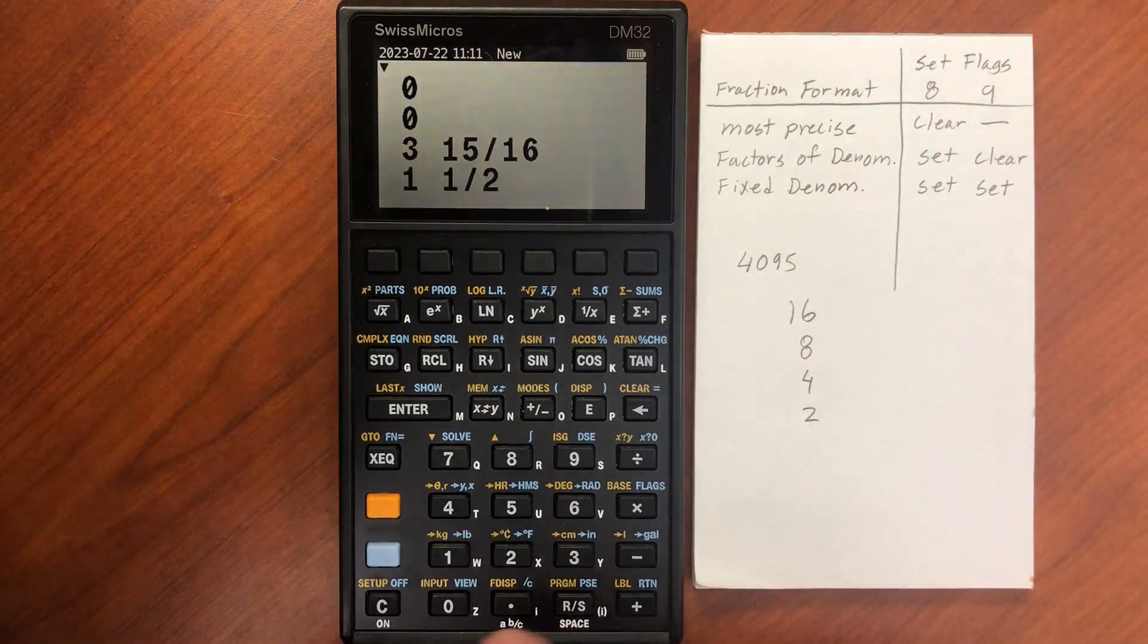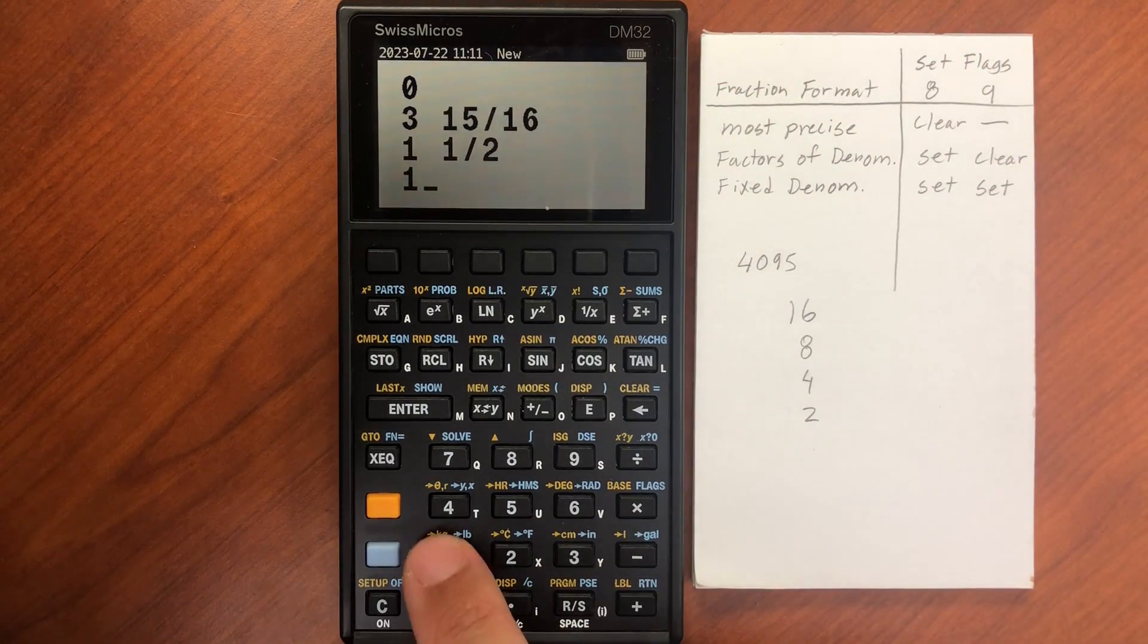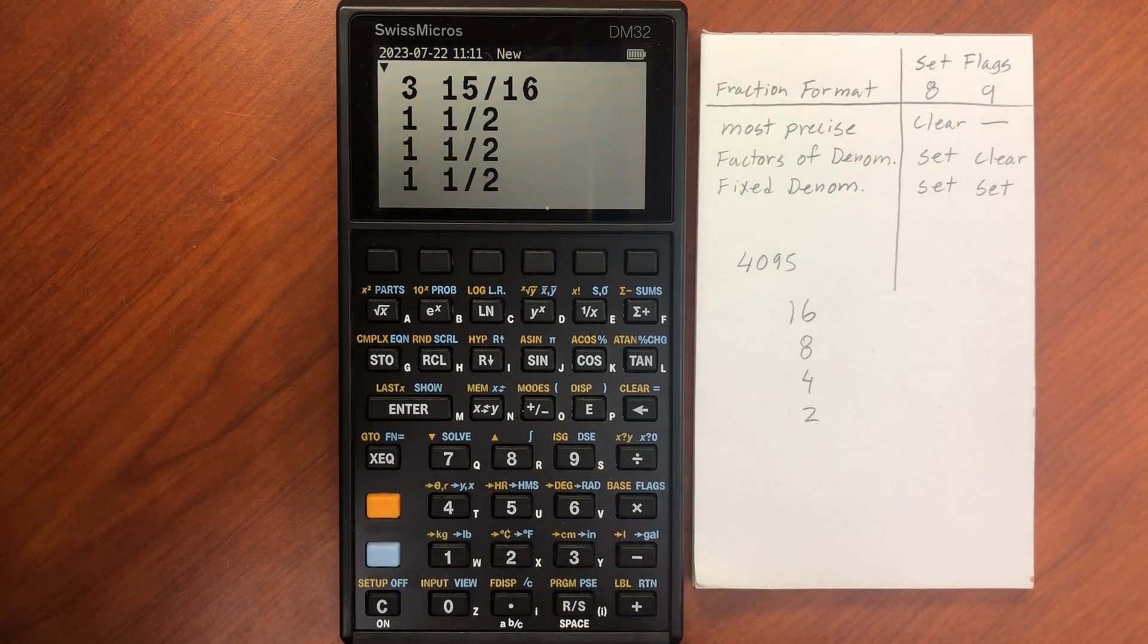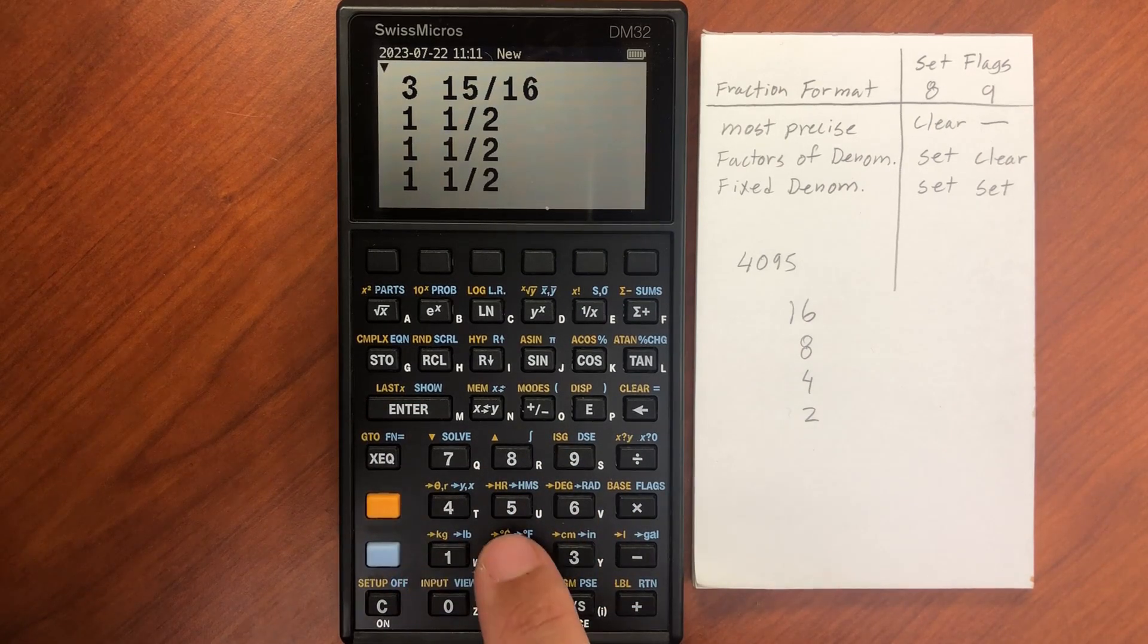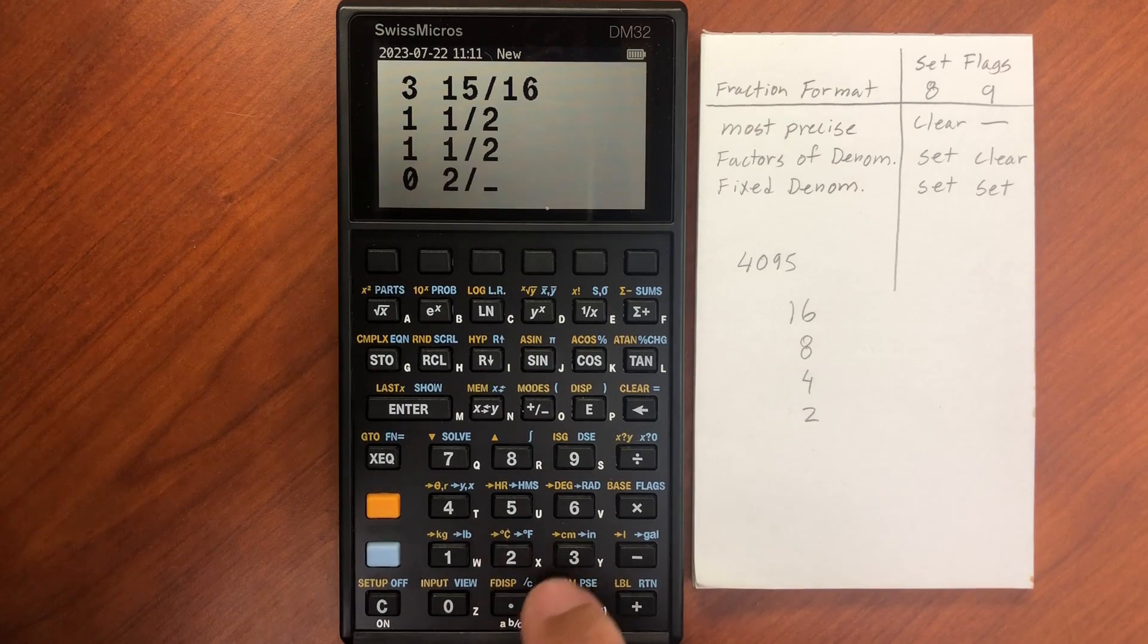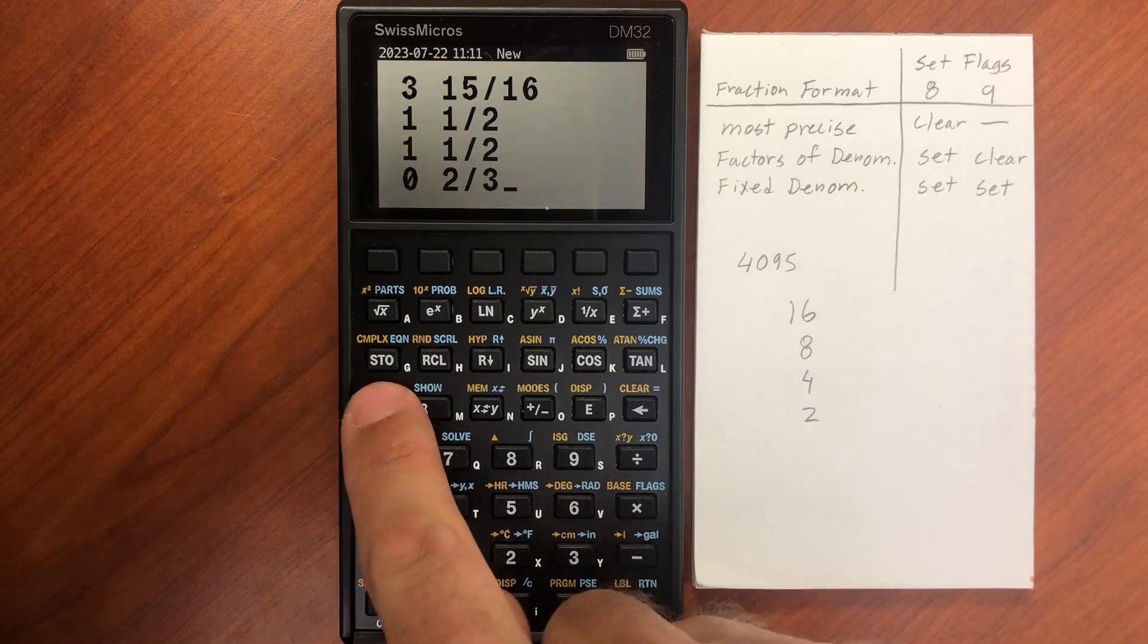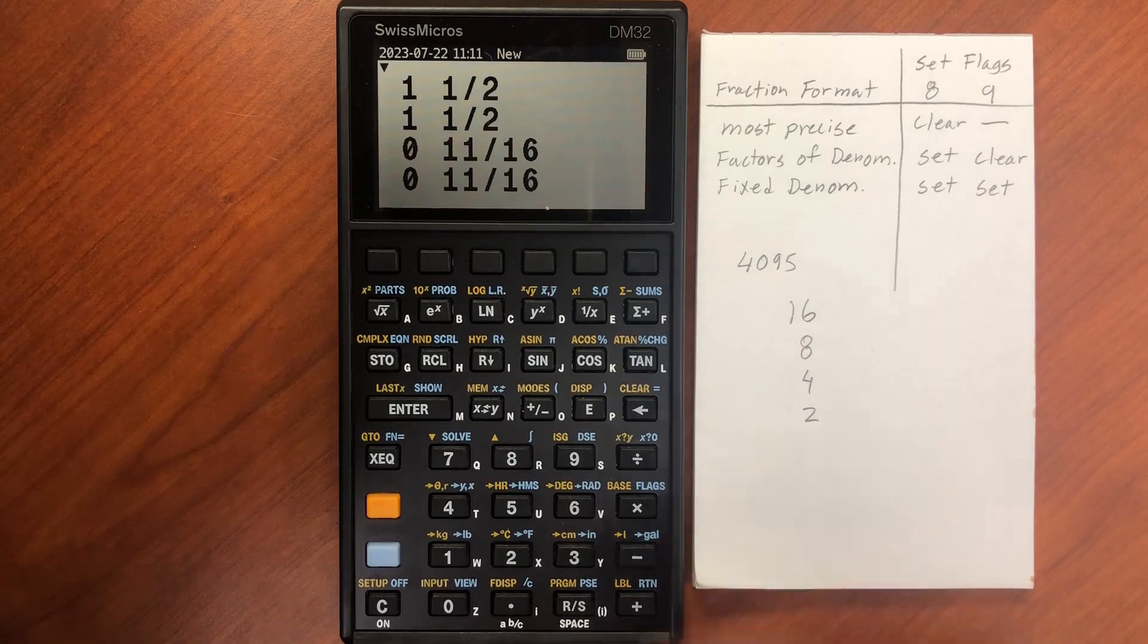So if I say, well, let's do that 1.49 we had again. That gives me 1 and 1/2. If I do the 2/3 and enter that, it gives me 11/16.